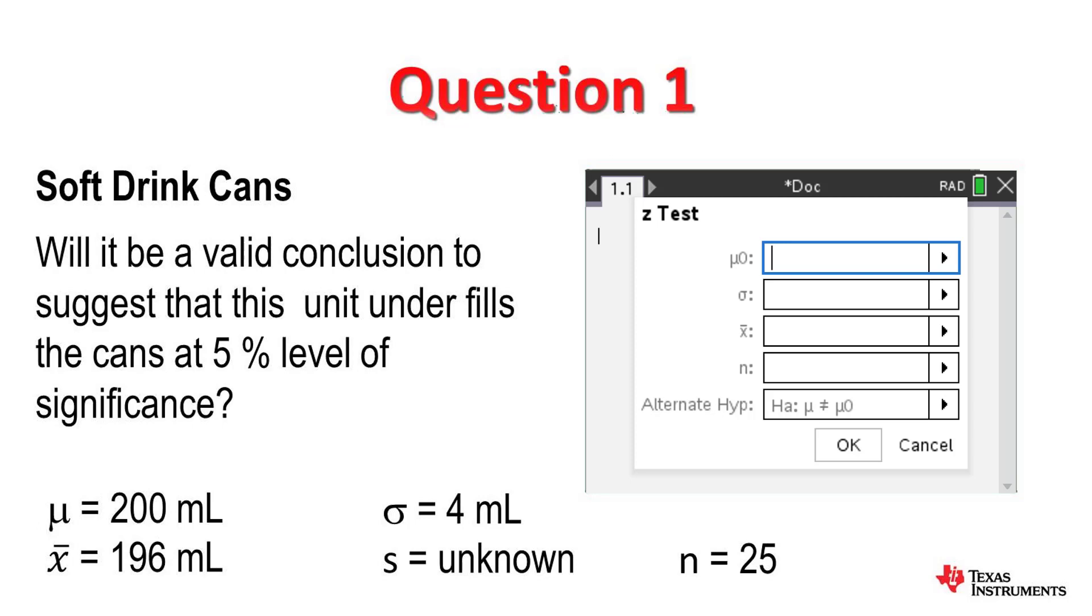This brings up a template. The template is straightforward. We put the actual mean, which is 200 for us, and then the standard deviation is 4. I tab into the next cell, whereby the average we are testing for is 196, and then the sample size was 25.